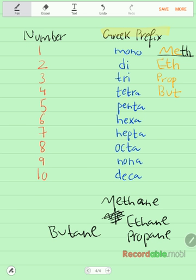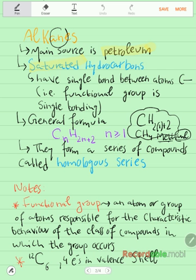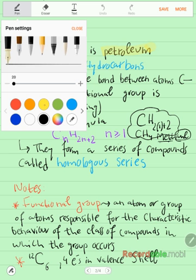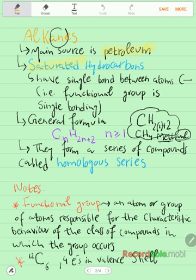Let's go back to where we were. So we were talking about the general formula and the general formula for alkanes. You need to have this memorized: CnH2n plus 2. It's a very simple formula. And you need to know that n has to be greater than or equal to one.